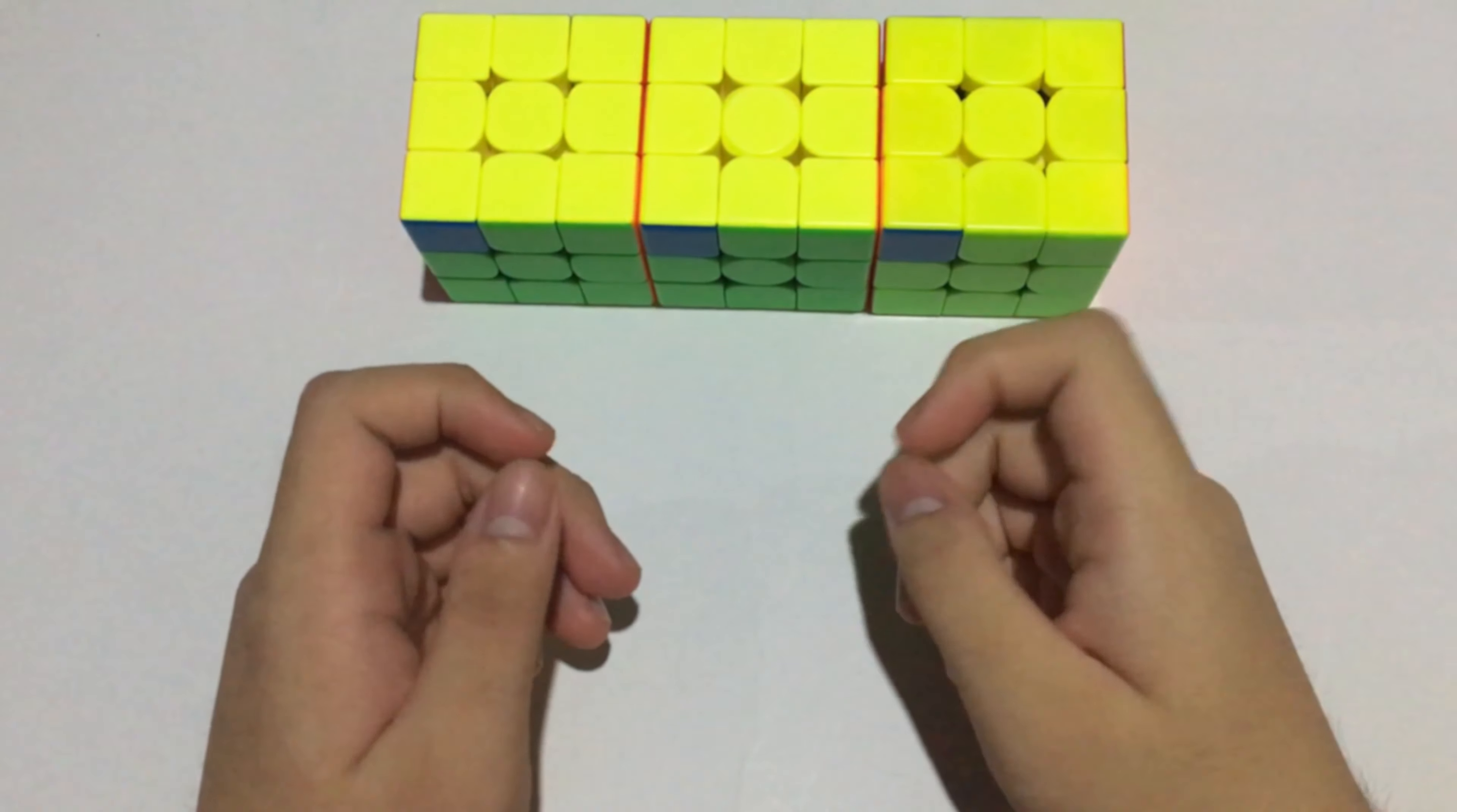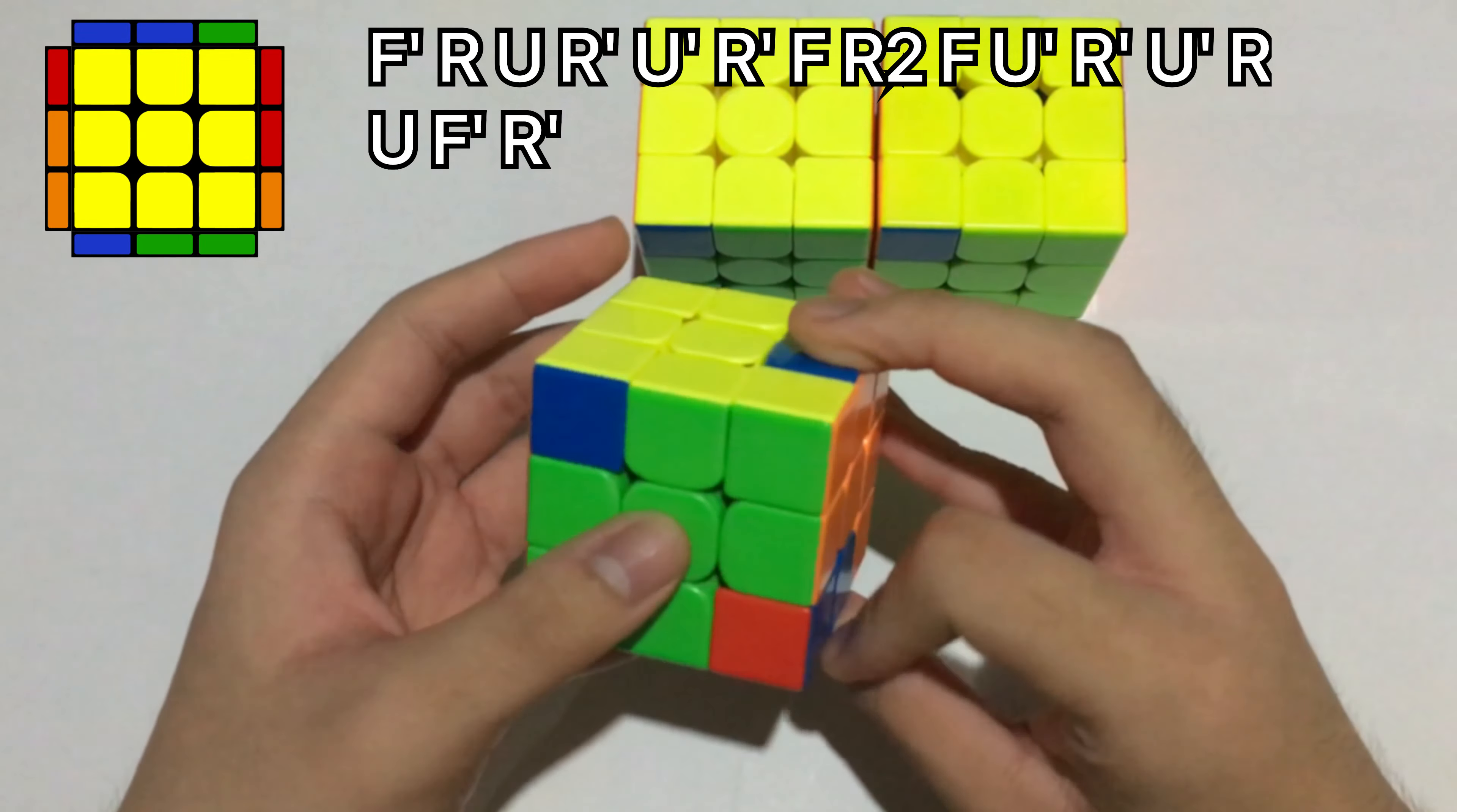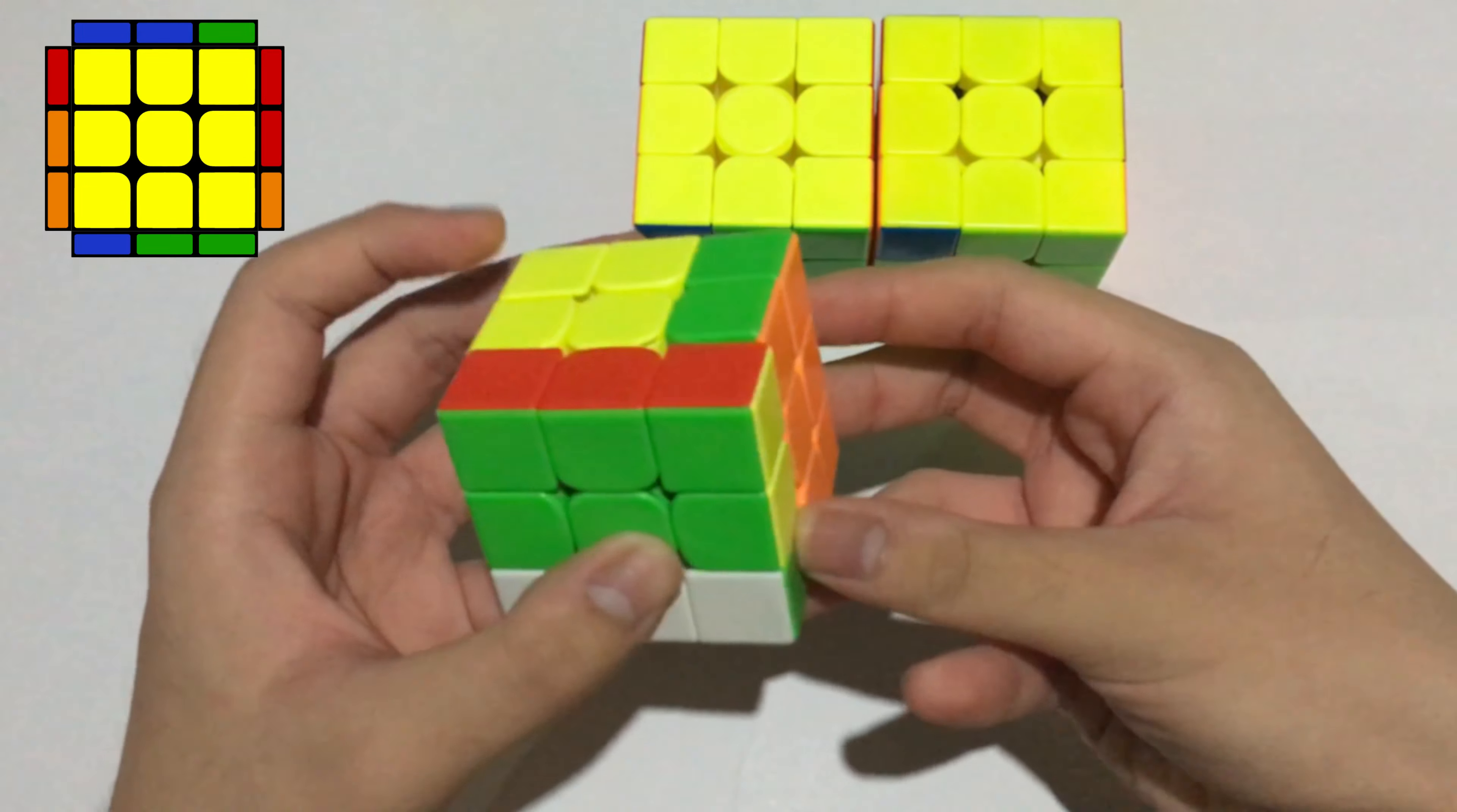Hey cubing gang, Alfred here. Today we are going to talk about N perms. So this is the Na perm algorithm that I use. You may not like it because it has the awkward F move like that.